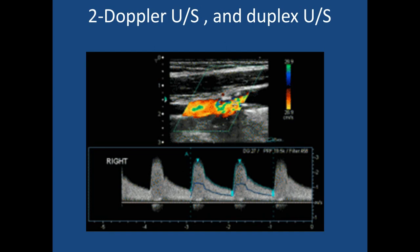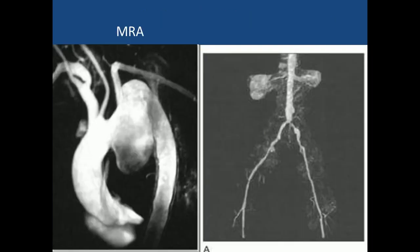Doppler ultrasound measures flow velocities and patterns of flow, which are very helpful in diagnosis. Combined with 2D imaging it is called duplex, and with color flow it is called triplex. It is a useful non-invasive screening test. MRI angiography provides nice detail, is costly but does not require intact renal function and avoids contrast-induced nephropathy or radiation exposure.